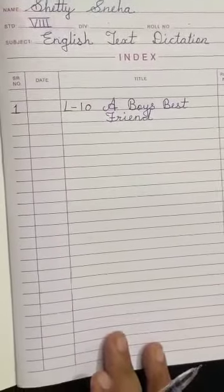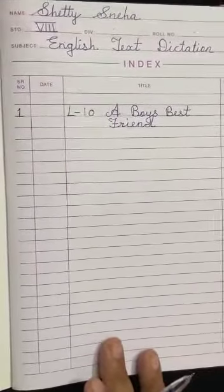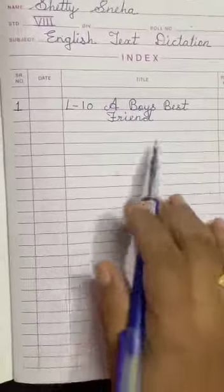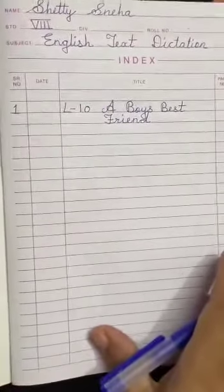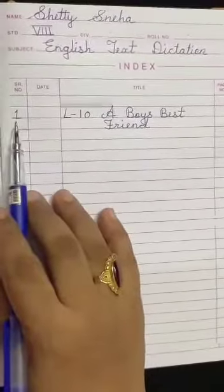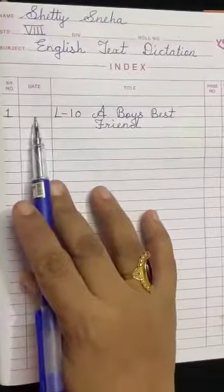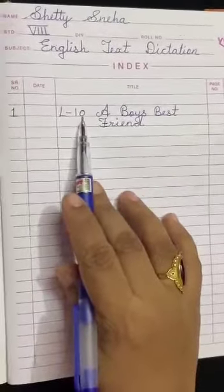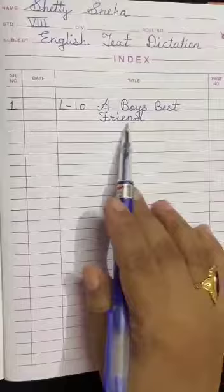Today we are going to give English dictation of lesson number 10, A Boy's Best Friend. So open your index page, write down serial number 1, put today's date here, lesson number 10, A Boy's Best Friend.